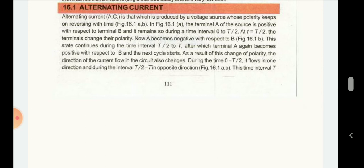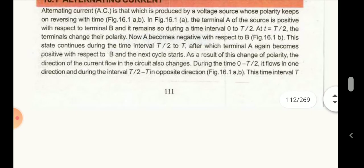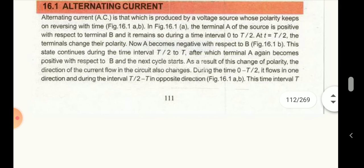Here in the figure, the terminal A of the source is positive with respect to terminal B, and it remains positive during the time interval 0 to T/2 — yani, half time ke liye. And at t = T/2, the terminals change their polarity, and now A becomes negative with respect to B. This state continues during the interval T/2 to T, after which terminal A again becomes positive with respect to B, and the next cycle starts.